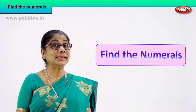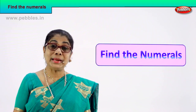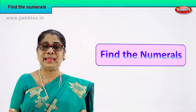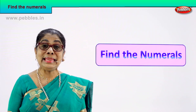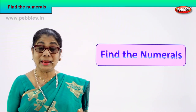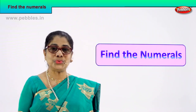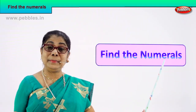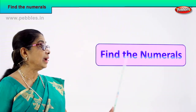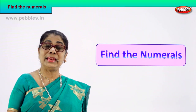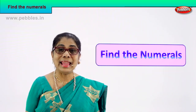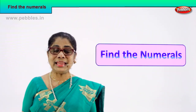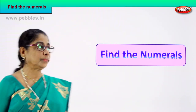Hi children. We learnt the numerals 61 to 70 — we learnt all the number names, spell and write. Now let us do an interesting exercise. I will give you the number name and you will find the numeral for me. Find the numeral — whatever the name of the number that comes up, spell, read, identify and write the numerals. Shall we do that?